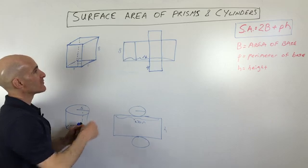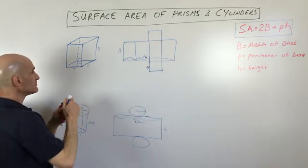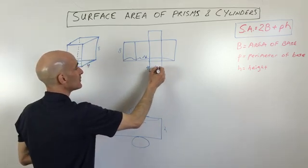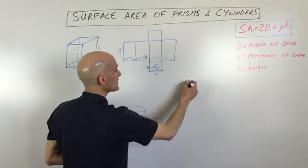But what we can do is we can find the area of this base. These two bases and you can see it's a square. It's over here, this is four by four, so that's going to be 16. For the area of the base times two because we have two of them, so that's two times 16.